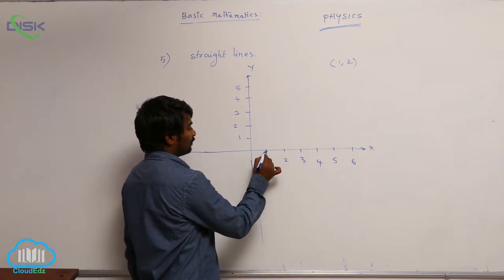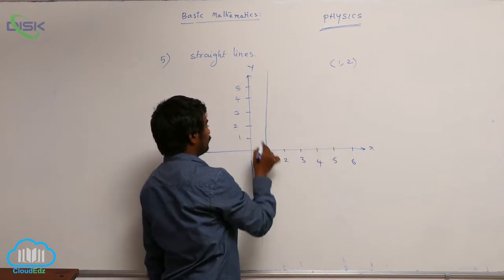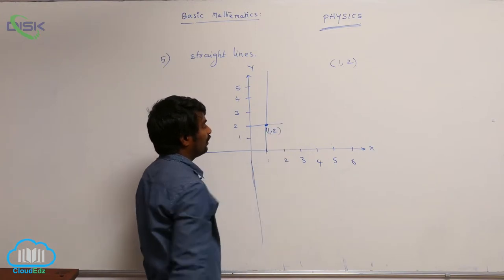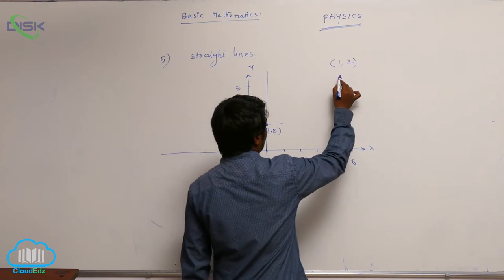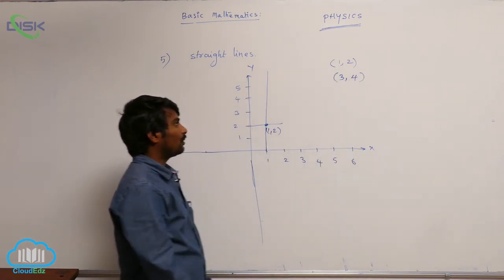So x is 1, y is 2, this point is for (1, 2). And suppose if I want to go for (3, 4), x-coordinate is 3, y-coordinate is 4.